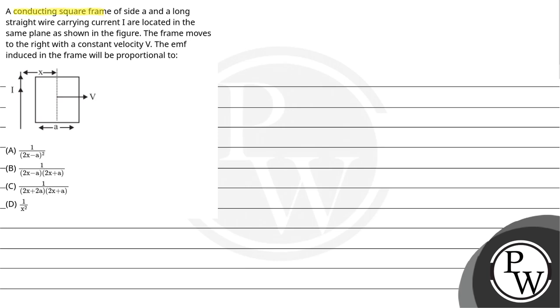Let's read the question. A conducting square frame of side A and a long straight wire carrying current I are located in the same plane as shown in figure.